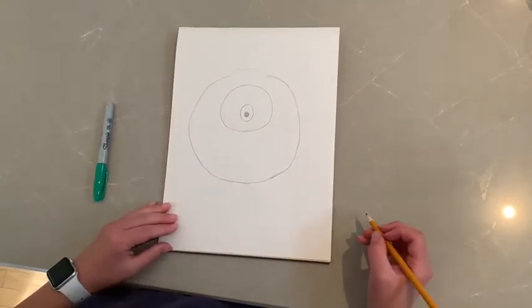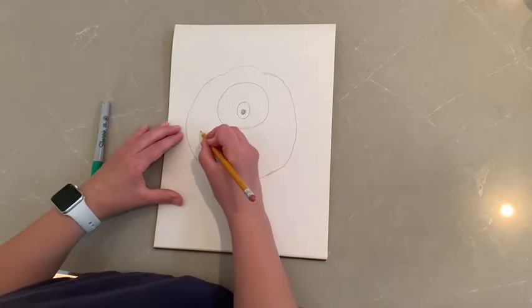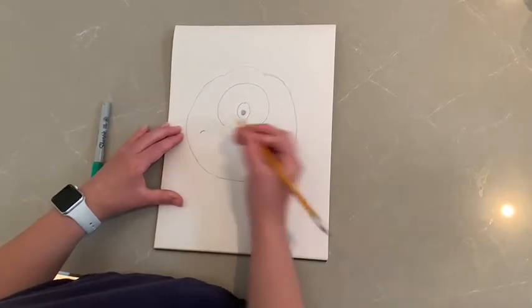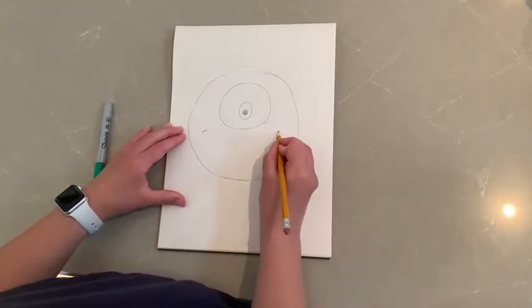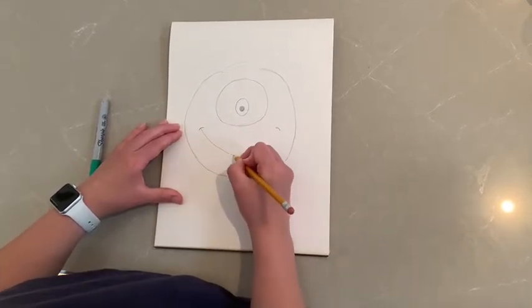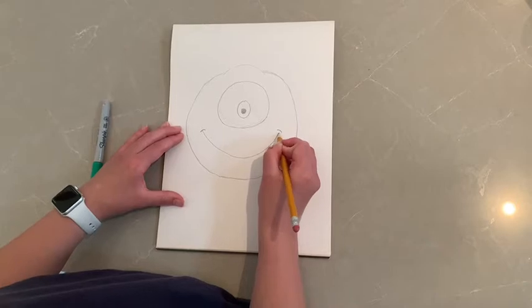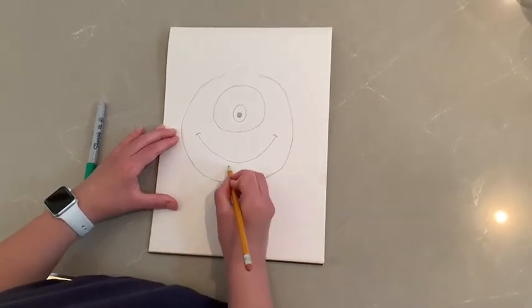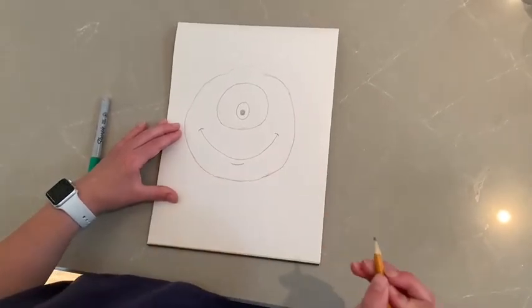So next we're going to draw his smile. So he has a pretty big smile. I'm just going to do a little arc line right there, and a little arc on the other side. And then I'm going to connect it with the big smile. And then a little line right here, just like that.